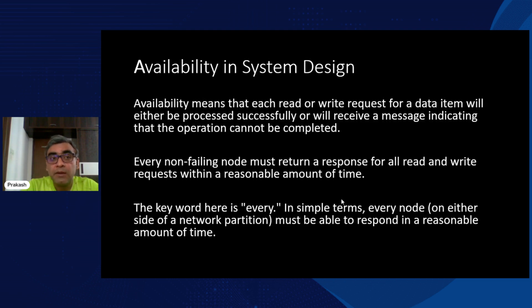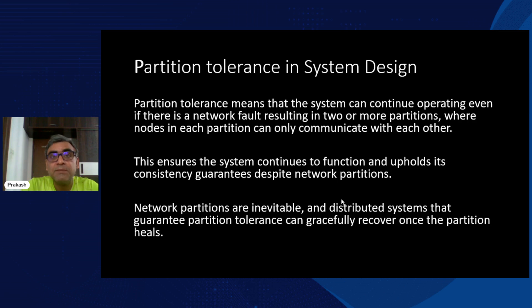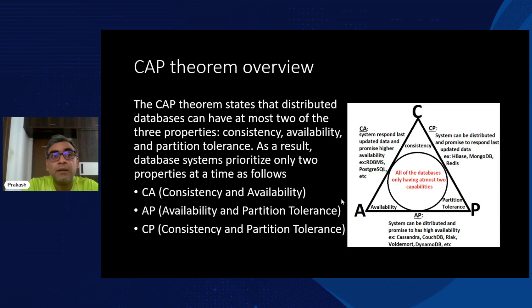You can imagine the problems that can arise if the system is not designed for availability. The last component in CAP is partition tolerance. In a distributed system, partition tolerance is essential because we're talking about different network partitions — systems connected across the globe via networks. Partition tolerance means the system should still be able to establish connections and communicate between different server nodes. Now, what CAP theorem says is that in a distributed system you can't have all three at the same time — you can have at most two.